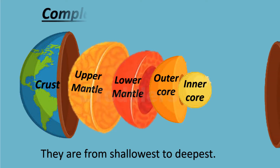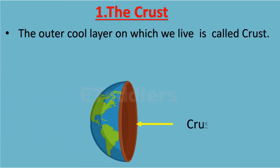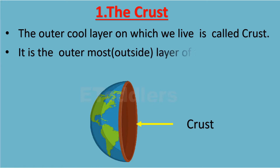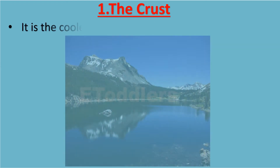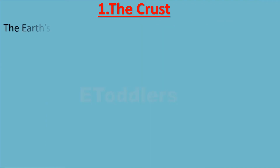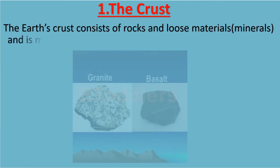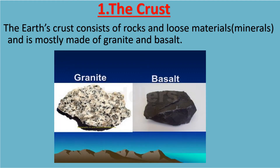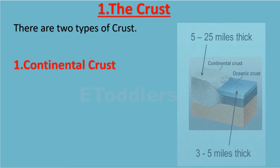This is the complete structure of the earth. The crust is the outer cool layer on which we live. It is the outermost layer of the earth. It is solid and is up to 100 km thick. It is the coolest in temperature of all the layers. The earth's crust consists of rocks and loose materials like minerals and is mostly made of granite and basalt. There are two types of crust.